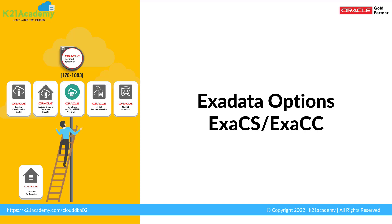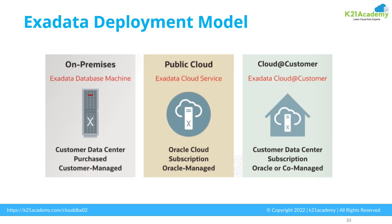There are two options: Exadata Cloud Service or Exadata Cloud@Customer. Typically when you're deploying Exadata you can deploy in three models. On the extreme left is on-premise — the traditional style where you buy Exadata as a physical machine. Then you have public cloud, which is Exadata Cloud Service running on a subscription model on Oracle Cloud Infrastructure (OCI). On the right-hand side is Exadata Cloud@Customer, which is the same Exadata Cloud Service but running on customer premises, where you buy a subscription and hardware for a minimum number of years.